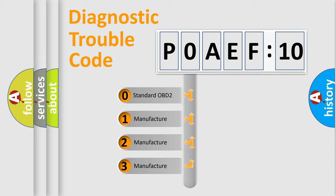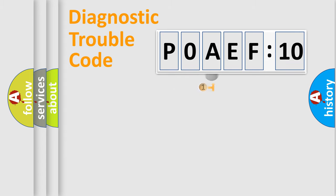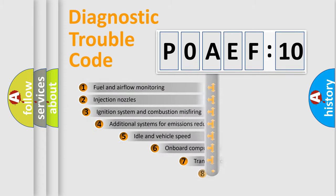If the second character is expressed as zero, it is a standardized error. In the case of numbers 1, 2, 3, it is a more prestigious expression of the car-specific error.